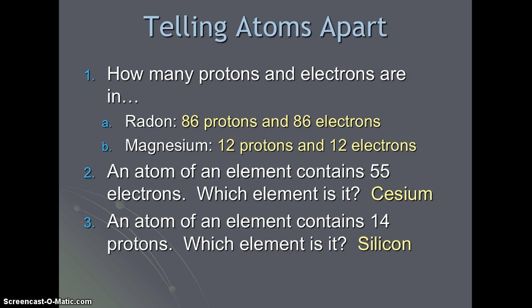An atom of an element contains 14 protons. Which element is it? The 14th element on the periodic table is silicon.